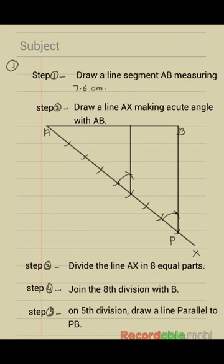Now on the fifth point we have to construct a parallel line parallel to BP. To construct parallel to BP you need to take one arc from point P.